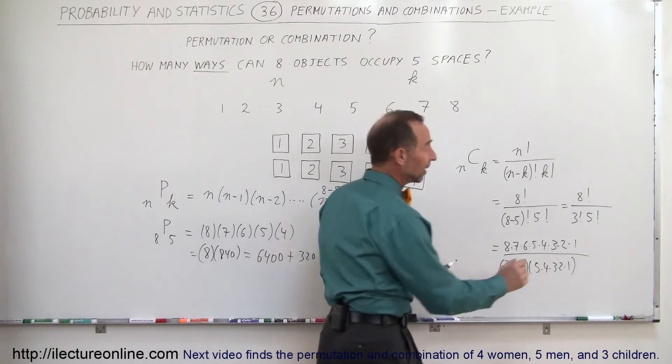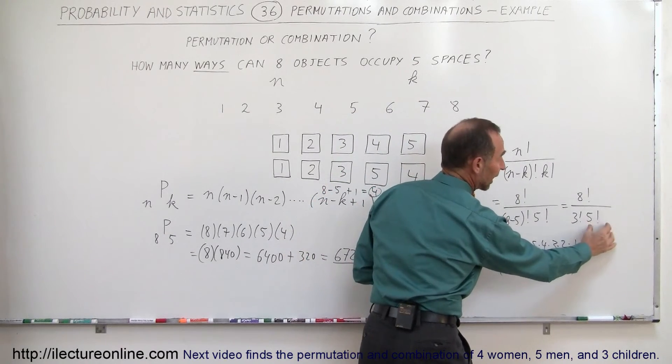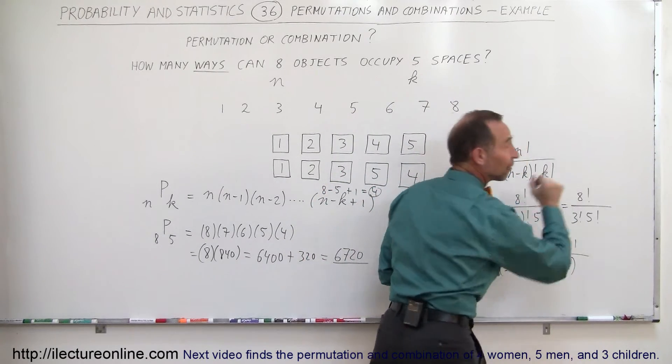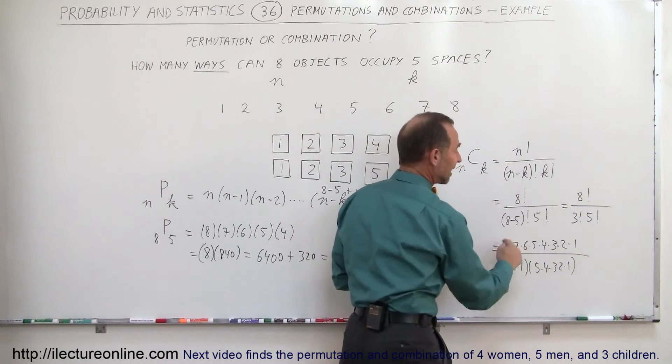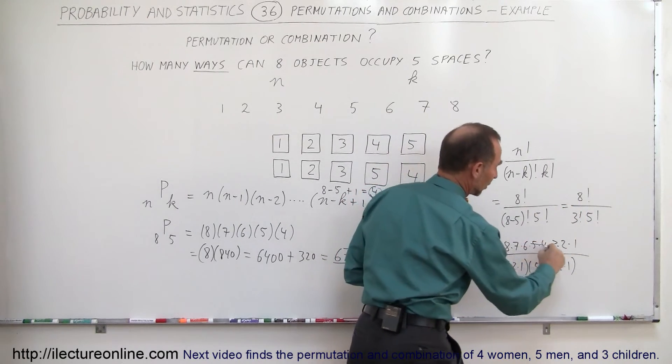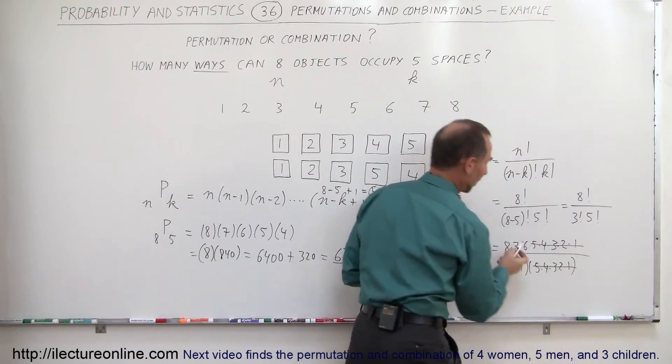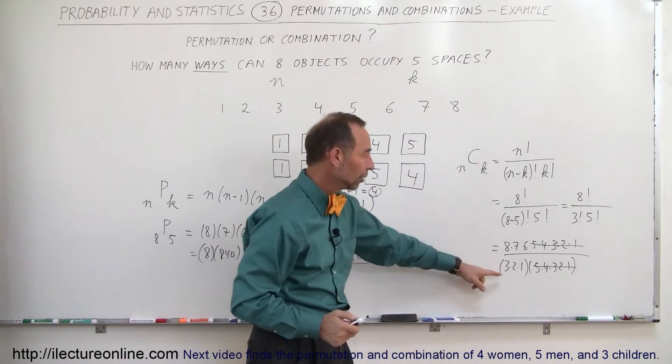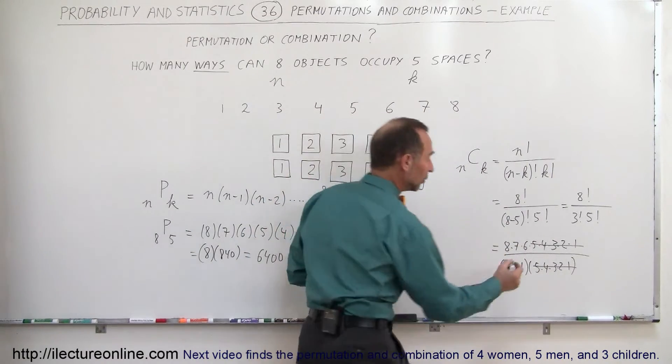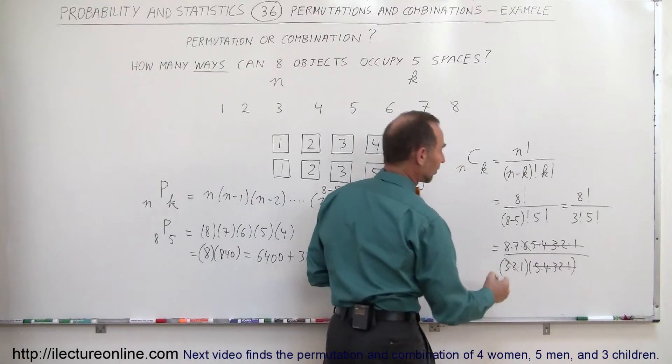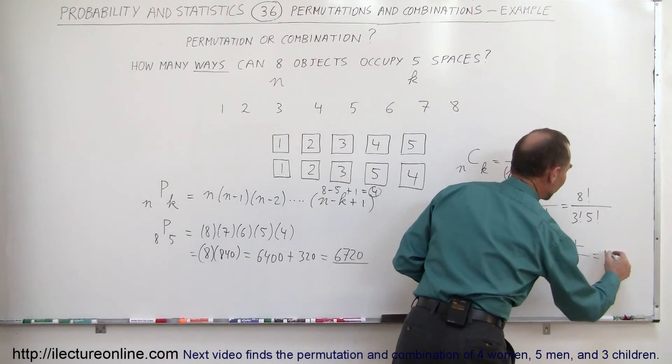Usually what we do is we realize that 5 factorial will cancel out with the bottom 5 numbers of 8 factorial, which only would leave 8, 7, and 6, which is indeed what happens when you simplify. Cancel these out, so you end up with 8, 7, and 6 in the numerator, 3, 2, 1 in the denominator. Then notice this 6 cancels out with this 6 and you're left with 56.